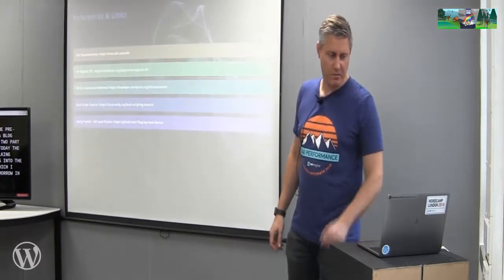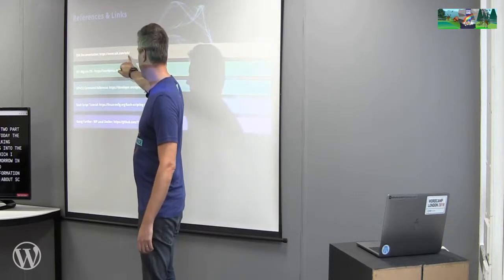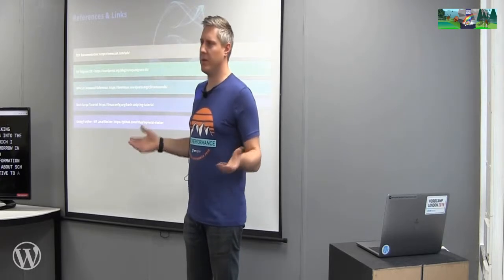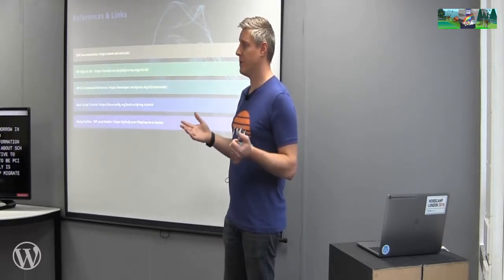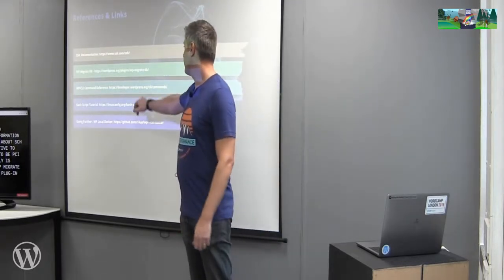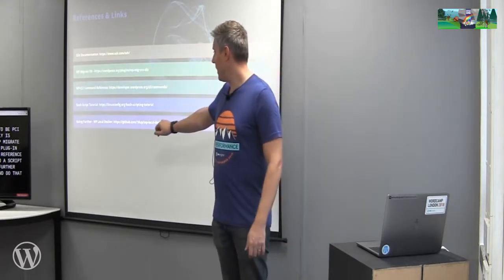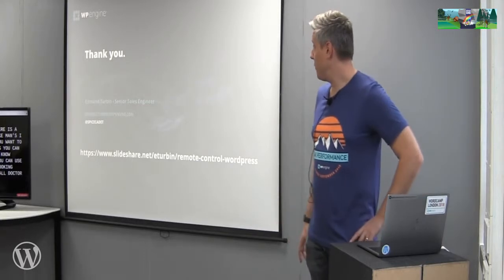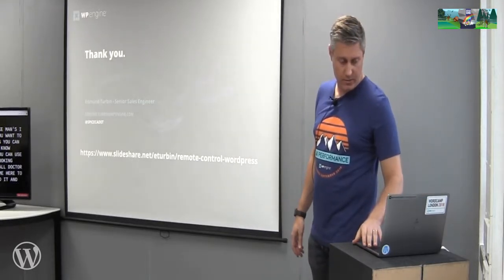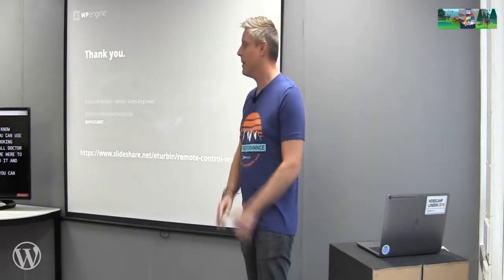I've also added reference links. If you want to learn more about SSH, that's there. I've added an alternative — if you don't want to use WP CLI for this, WP Migrate is available as a plugin, which would be a lot simpler. There's a reference for WP CLI db commands, a link to a shell scripting tutorial if you want to learn more about Bash, and if you don't want to use VVV you can look at WP Local Docker as a forward-looking approach. You can reach me at edmund.chairman@wpengine.com and on Twitter at @spacecadet.